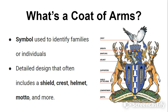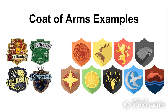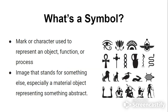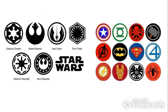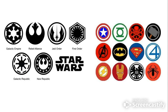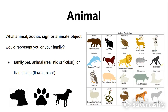Yesterday we talked about symbols as well as what a coat of arms is, and we looked at several different examples and defined what a symbol was. Yesterday you should have started some brainstorming, focusing on a variety of different categories by looking at your shared practice document.